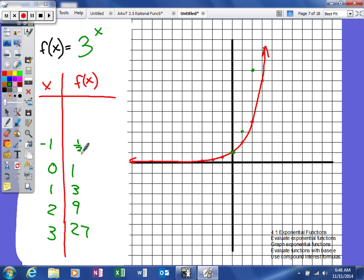So negative 1 will give us 1 third. Negative 2, 1 ninth. And negative 3, 1 over 27.